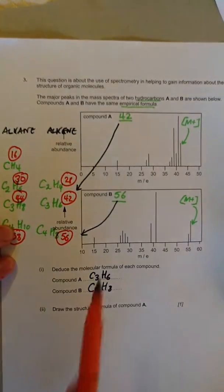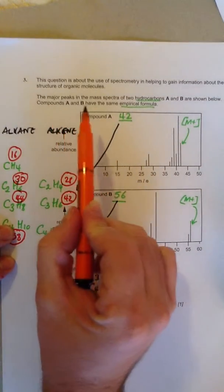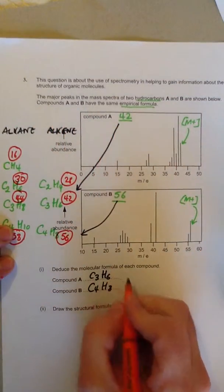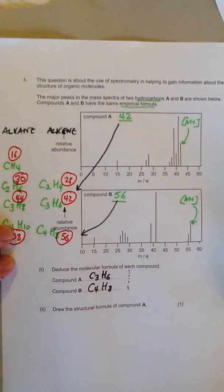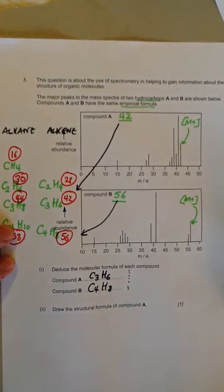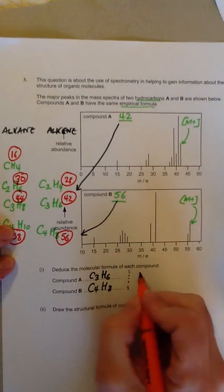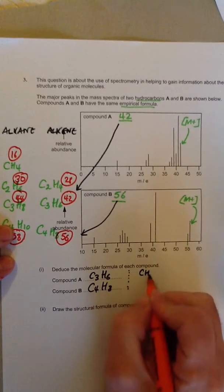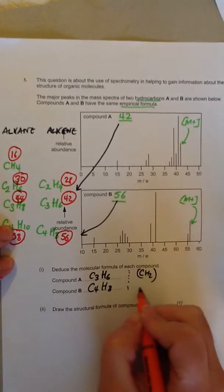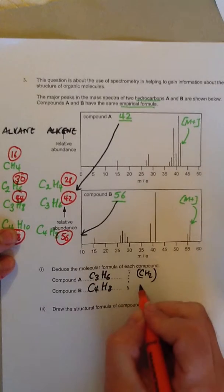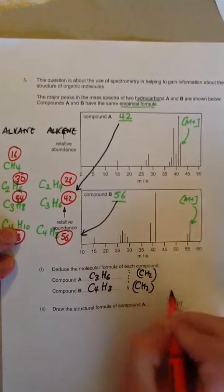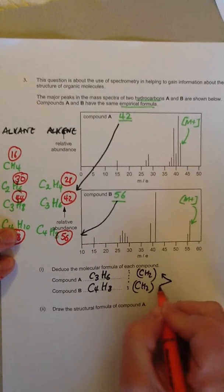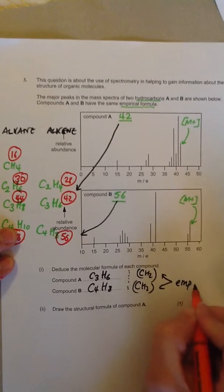Now, if we go back, what do the questions say? Compounds A and B have the same empirical formula. So if we check, the empirical formula is the simplest ratio of the atoms to each other. So that's CH2, the empirical formula. And the empirical formula of butene is CH2 as well. So we know that we've got the right track.